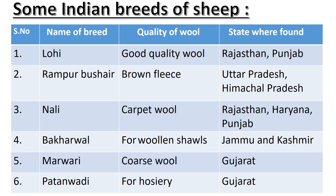Bakkarwal is another breed of sheep. The wool produced by these sheep is used for woolen shawls and they are commonly found in Jammu and Kashmir. The fifth breed is Marwadi. The quality of wool they produce is known as coarse wool and they are found in the state of Gujarat. The sixth and last breed is Patanwadi. The wool they produce is used for Hozri, and these sheep are also found in Gujarat.